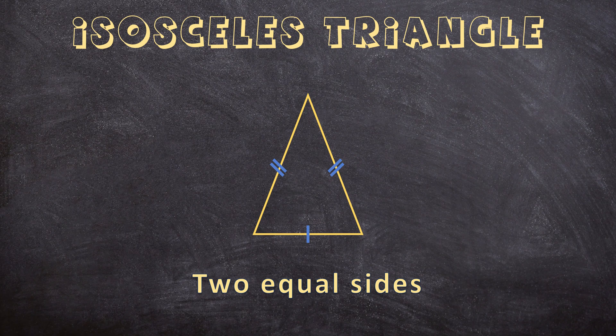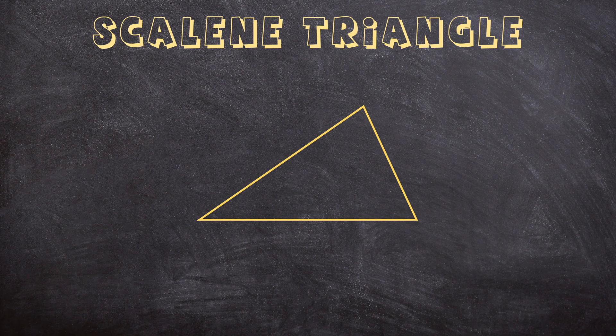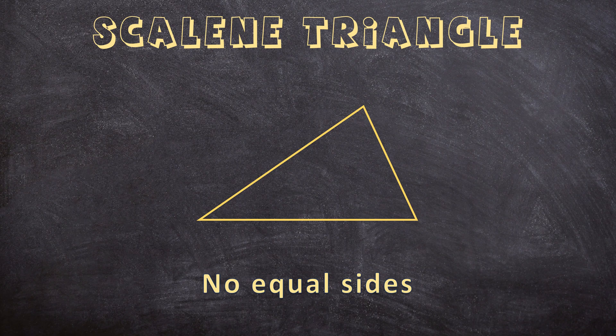And now for the third triangle. This is a scalene triangle. For a scalene triangle, none of the sides are equal — all of them are different in size. For example, this side may be 12 cm, but this side 7 cm, and this side 15 cm. So none of them are equal in length.